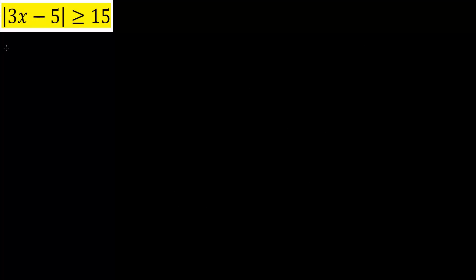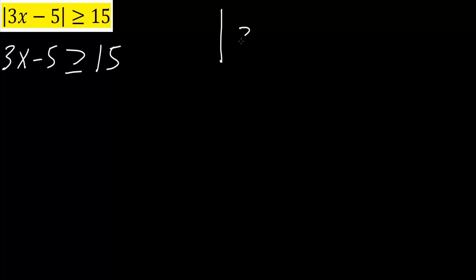Same idea for the second problem. We split it: 3x minus 5 is greater than or equal to 15, and 3x minus 5 is less than or equal to negative 15.